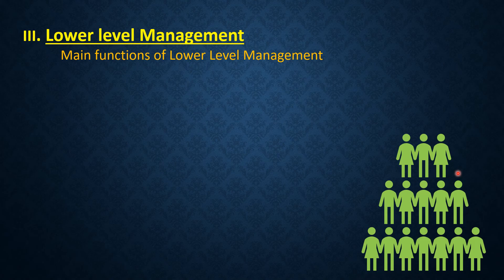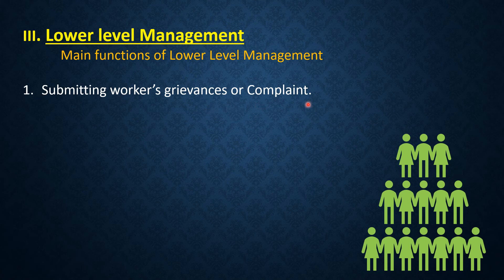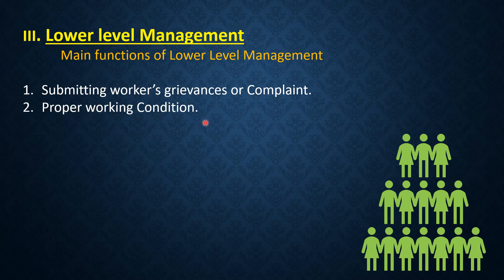Main functions of lower level management: First point is submitting workers' grievances or complaints. Lower level managers are in direct contact with workmen engaged in completing work. They sort out ordinary problems of workmen and submit serious complaints to middle level managers. Second point is ensuring proper working conditions — lower level managers ensure proper arrangement of water, electricity, ventilation, and cleanliness at the workplace, which increases efficiency.